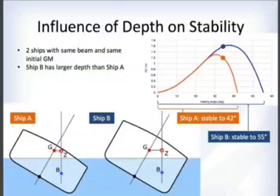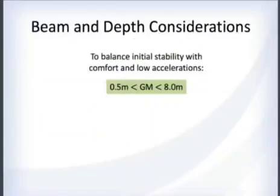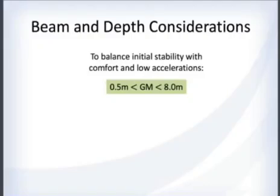As a result, Ship A has a range of stability up to only 42 degrees while Ship B reaches 55 degrees. Taking beam and depth into account, you want to balance the initial GM for stability against the passenger comfort and low accelerations needed for cargo — this means targeting a GM somewhere between 0.5 and 8 meters, depending on the ship type.